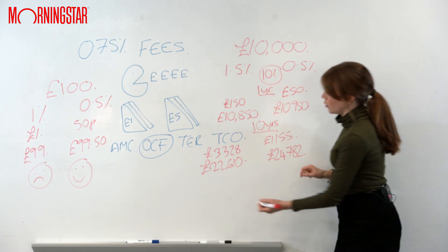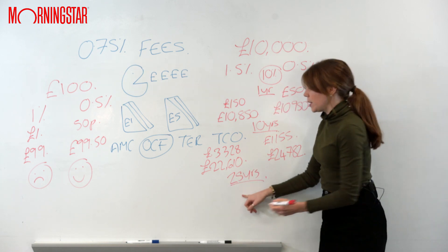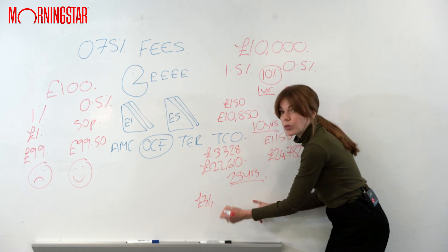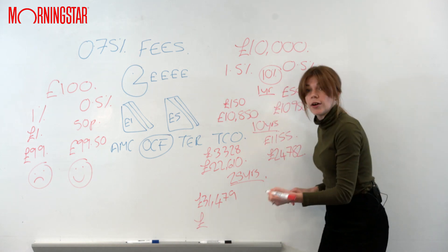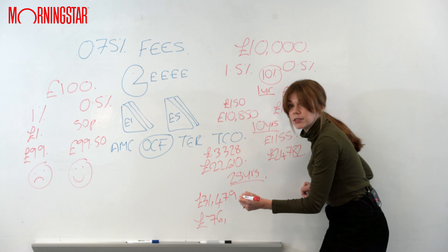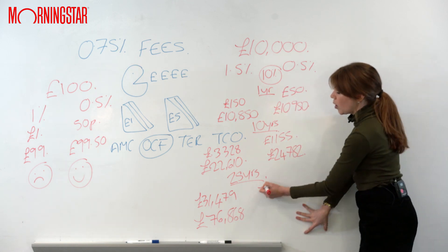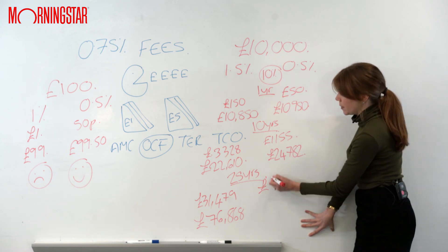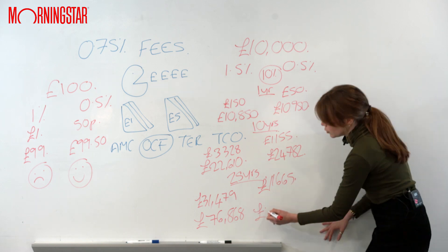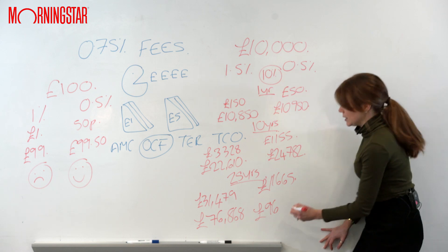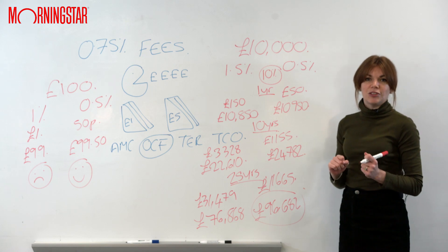Let's go even further into the future — 25 years, this is my retirement fund. The person in the 1.5% fund will have paid £31,000 in fees and still gets back a tidy sum of £76,868. That doesn't sound too bad on the surface. But the person in the 0.5% fund only spent £11,000 on fees and has marched off into the sunset for retirement with £96,682 — all because they found a cheaper fund.